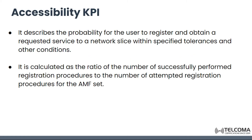Accessibility KPI: It describes the probability for the user to register and obtain a requested service to a network slice within specified tolerances and other conditions. It is calculated as the ratio of number of successfully performed registration procedures to the number of attempted registration procedures for the AMF set. AMF is Access and Mobility Management Function set.